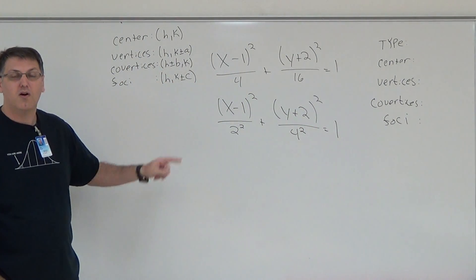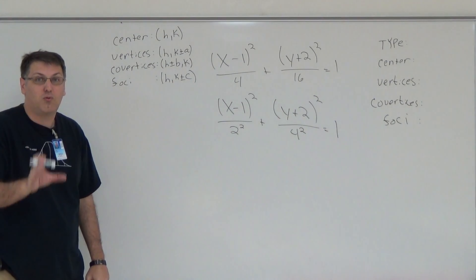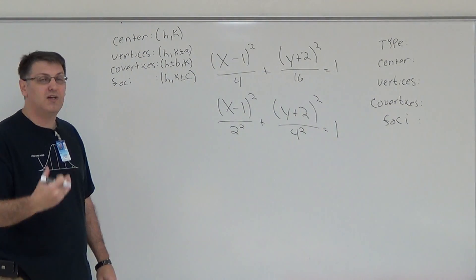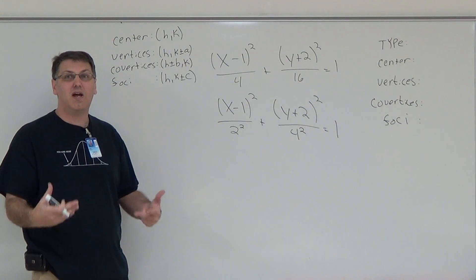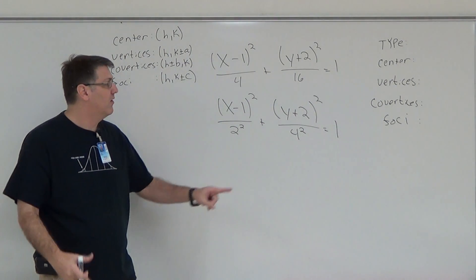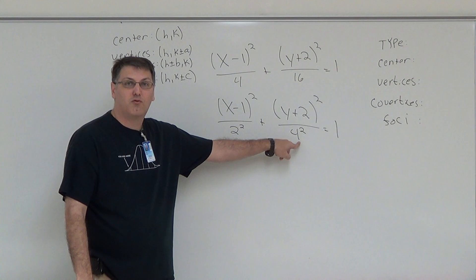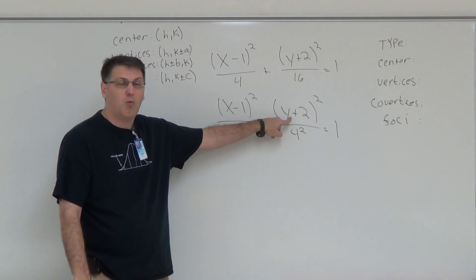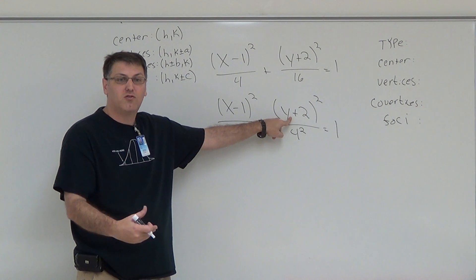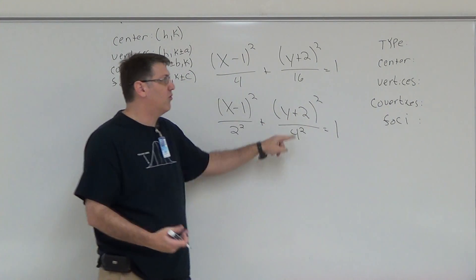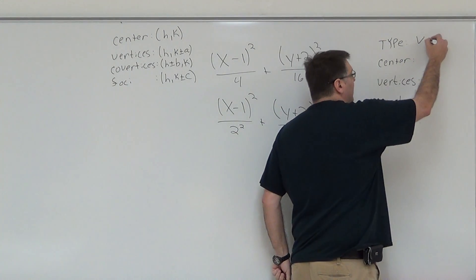From here, you can answer your very first question: what type of ellipse is this? You always look for the biggest number beneath squared, because your A is always your biggest number. The biggest number beneath squared is 4, which is directly above your y. Therefore, your major axis is going to be parallel to your y-axis, making it vertical. So your type is vertical.